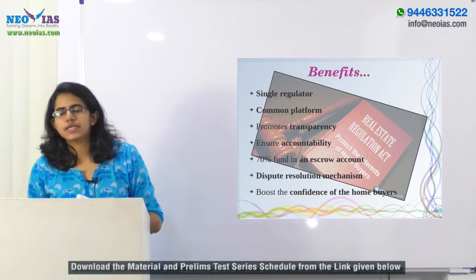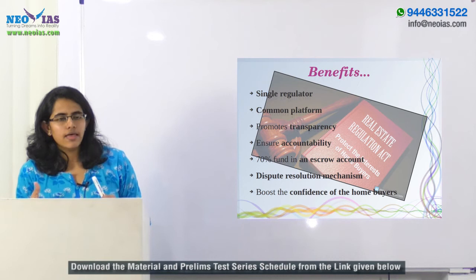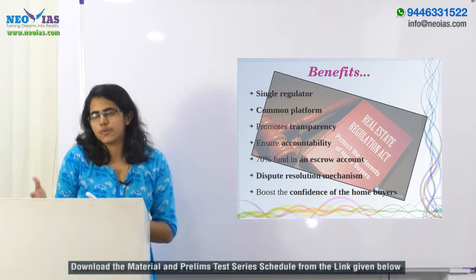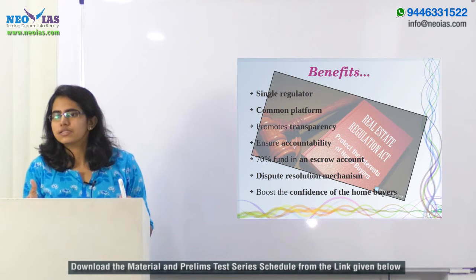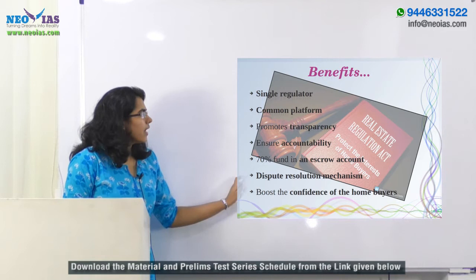Another benefit is in ensuring accountability. If a promoter fails to complete a project within the agreed timeline, they will have to compensate the buyers for the delay. If any deviation from an approved plan or specification is needed, the promoter must seek the consent of at least two-thirds of the allottees. If promoters compromise on quality and structural defects appear, they will have to rectify these defects within 30 days without charging any cost.